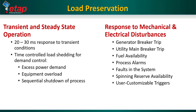ETAP ILS can respond within 20 to 30 milliseconds to transient conditions. It can also perform time-controlled load shedding under demand response scenarios such as excess power demand, equipment overload, and sequential shutdown of process. It is not limited to electrical disturbances — it can also respond to mechanical disturbances as well. The load preservation system is a powerful yet easy-to-use application within ILS to optimize load shedding, identify islands, and respond to electrical and non-electrical disturbances.